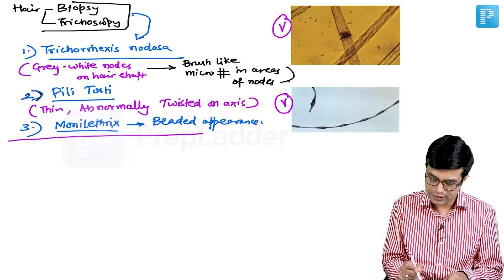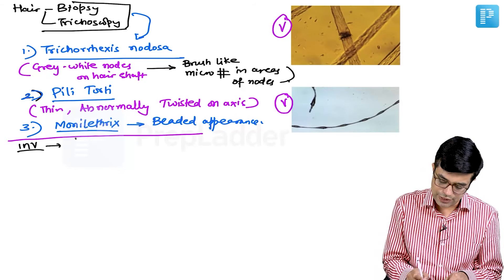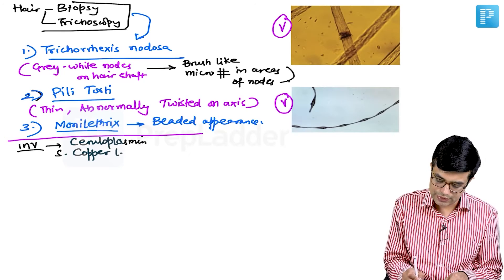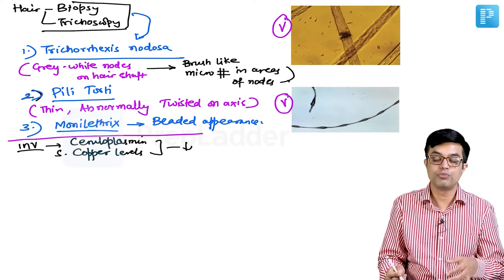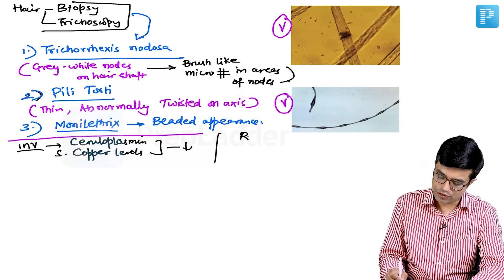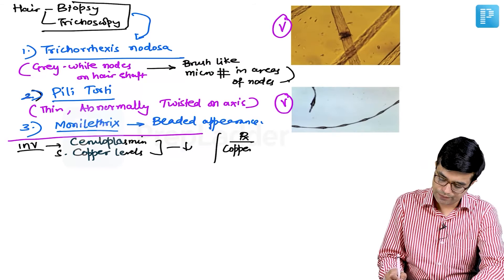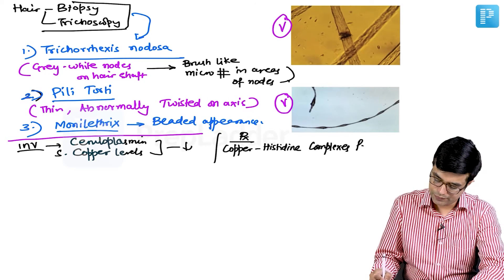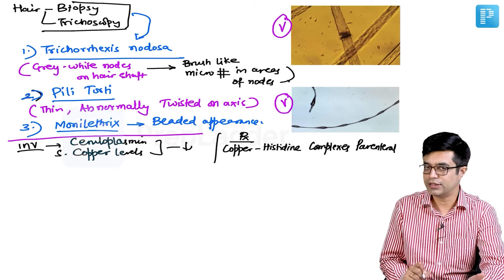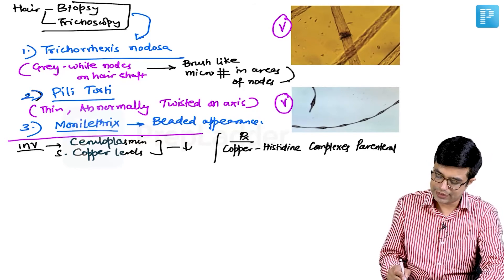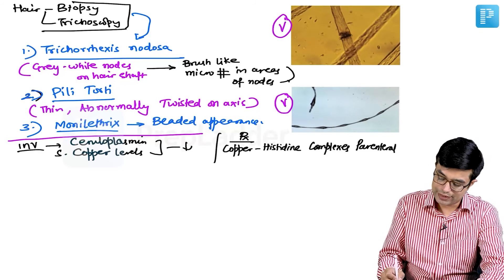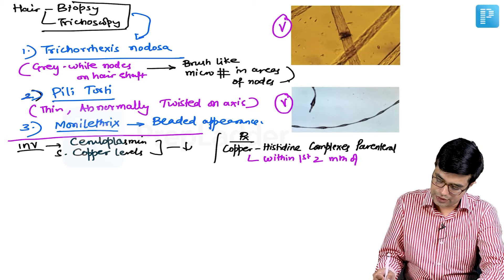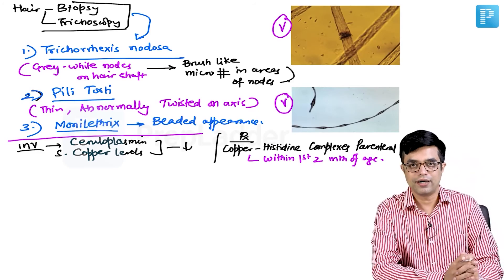When you do investigation, you will find that the ceruloplasmin levels as well as the total serum copper levels are found to be very low. Hypocupremia is seen in these individuals. For therapy, for treatment, you need to give copper histidine complexes parenterally. There is no role of oral supplementation of copper in these individuals because whatever you give will not be absorbed. Copper histidine complexes must be started within first two months of age. If you give them within first two months, the neurological abnormalities have been shown to improve.